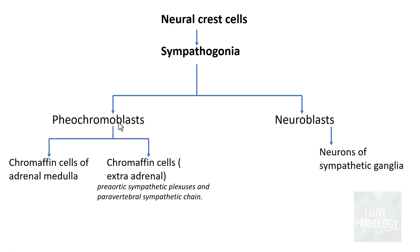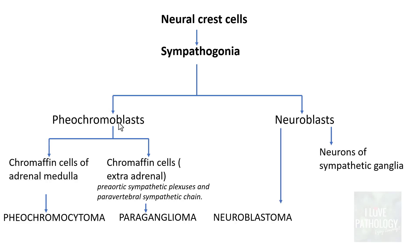Neuroblasts can give rise to neurons of the sympathetic ganglia. In terms of tumours: chromaffin cells of the adrenal medulla give rise to pheochromocytoma; extra-adrenal chromaffin cells give rise to paraganglioma; neuroblasts directly give rise to neuroblastic tumours; and the differentiated neurons of sympathetic ganglia give rise to ganglioneuroma. These are the four important tumours derived from sympathogonia.